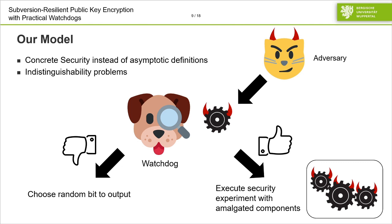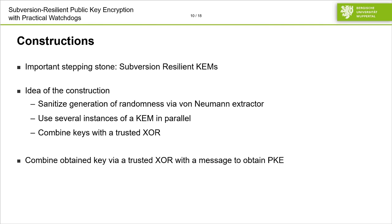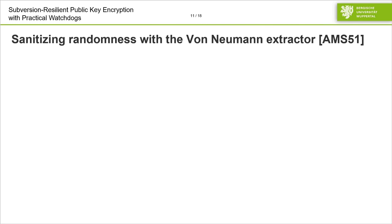Within this model, we showed how to construct subversion-resilient public key encryption. An important stepping stone are subversion-resilient key encapsulation mechanisms, or KEMs. The idea of our construction is that we will sanitize generation of randomness via the von Neumann extractor, which I will show in a bit. With random coins available, we will use several instances of a KEM in parallel and combine the keys via a trusted XOR function. This forms a secure KEM, and from this, by combining the obtained key via a trusted XOR function again with a message, we obtain subversion-resilient public key encryption.